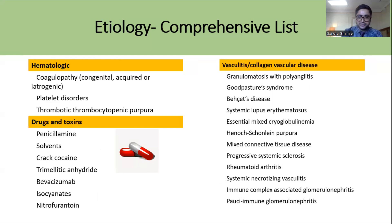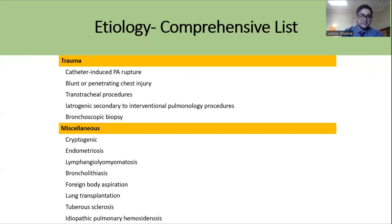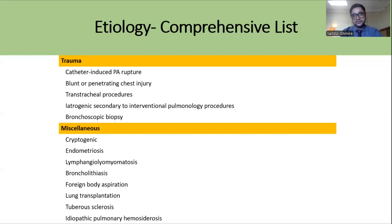Drugs and toxins such as penicillamine, crack cocaine, and nitrofurantoin can cause Massive Hemoptysis, as can vasculitic diseases like Goodpasture syndrome, HSP, rheumatoid arthritis, SLE, and necrotizing vasculitis. Trauma — iatrogenic or accidental, such as blunt or penetrating chest injury, or bronchoscopic trauma during biopsy — can also lead to Massive Hemoptysis. Miscellaneous causes include broncholithiasis and foreign body aspiration.